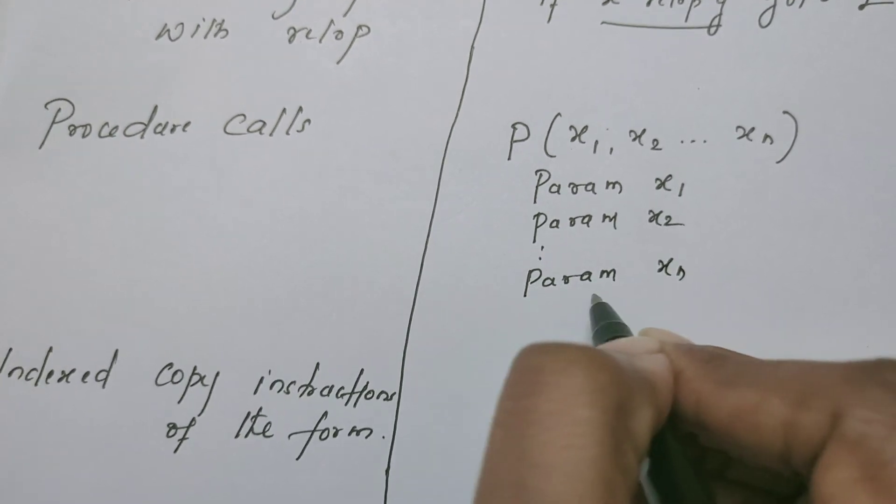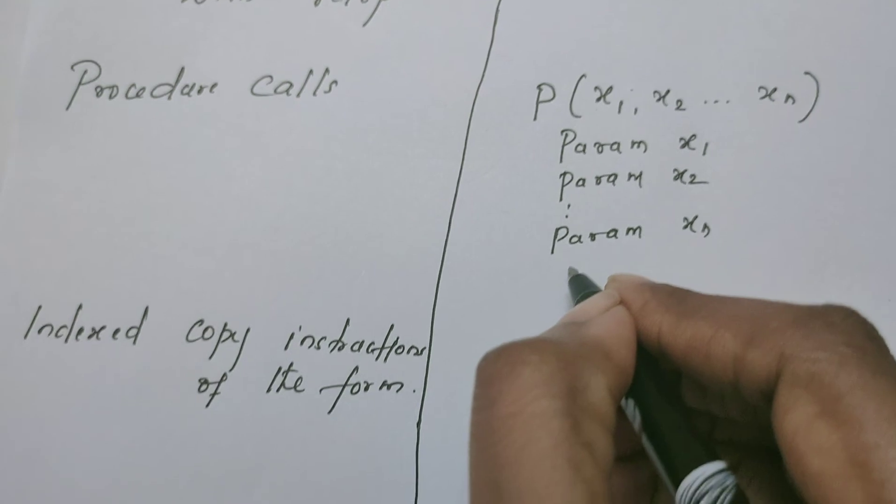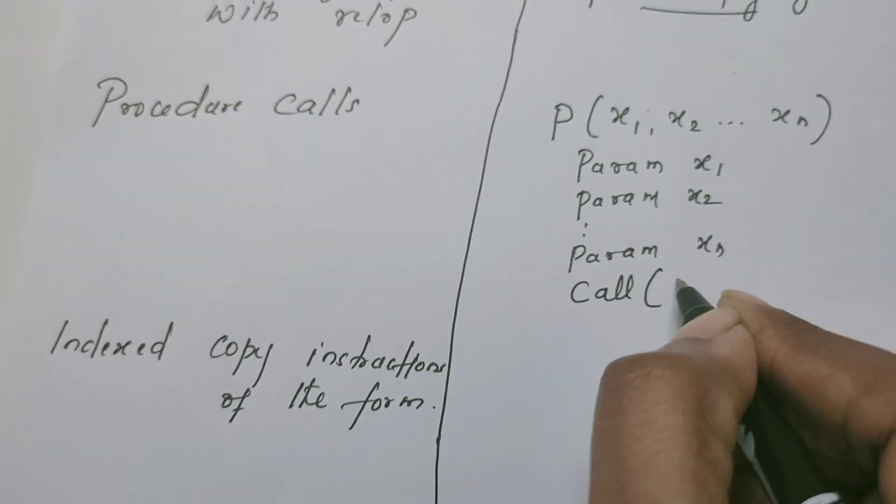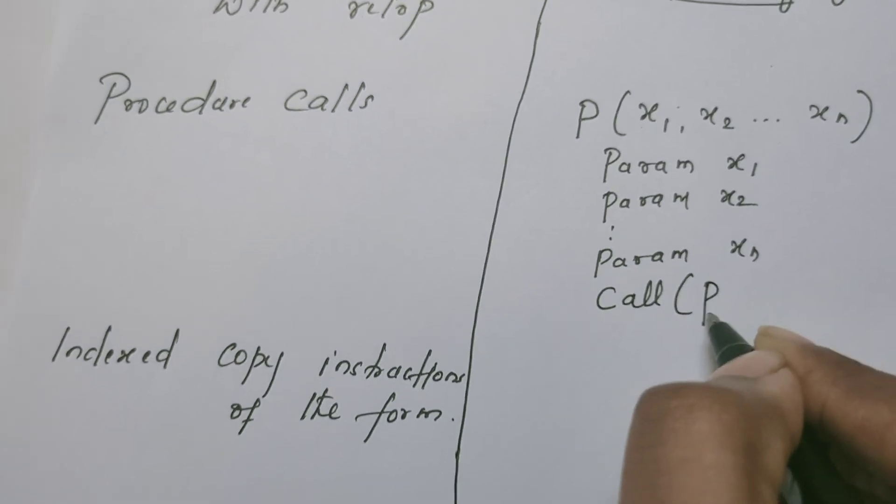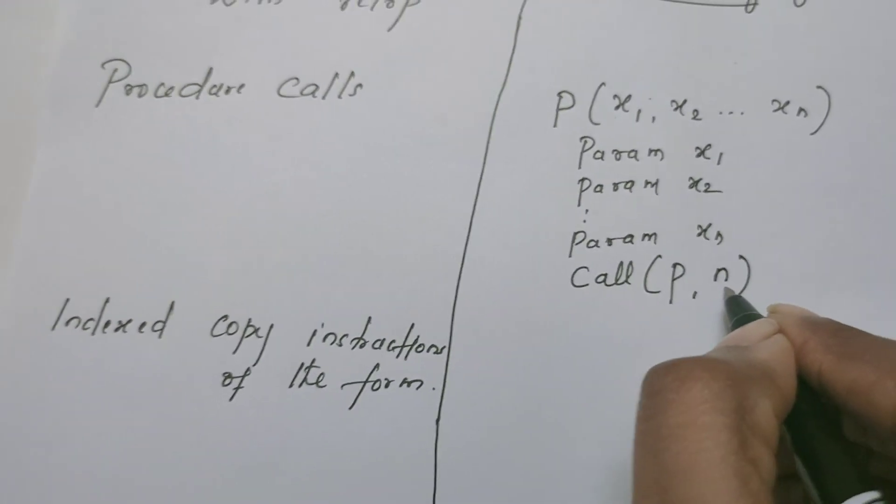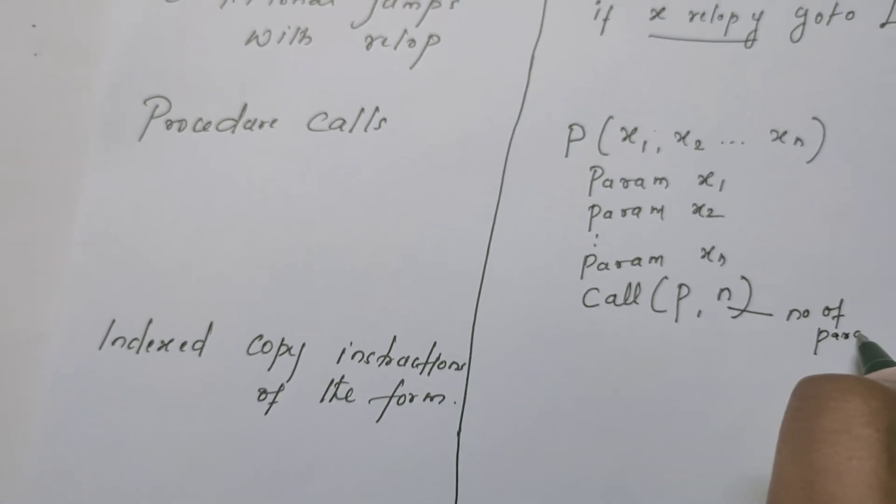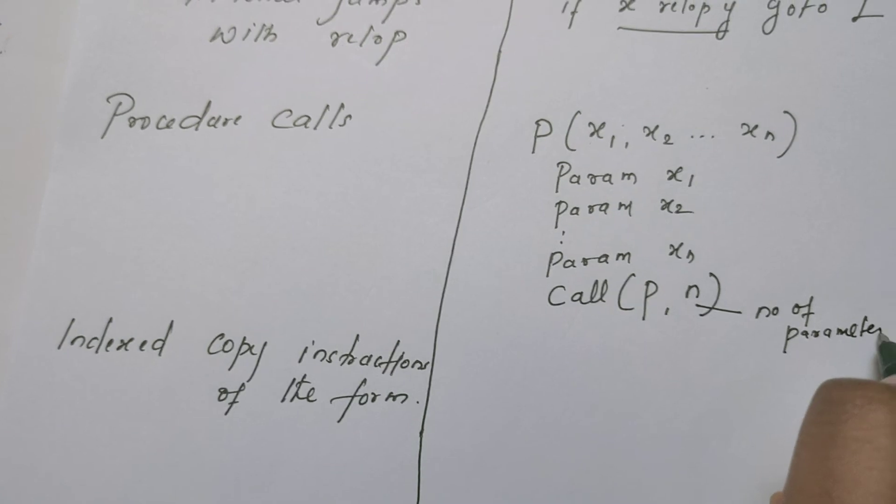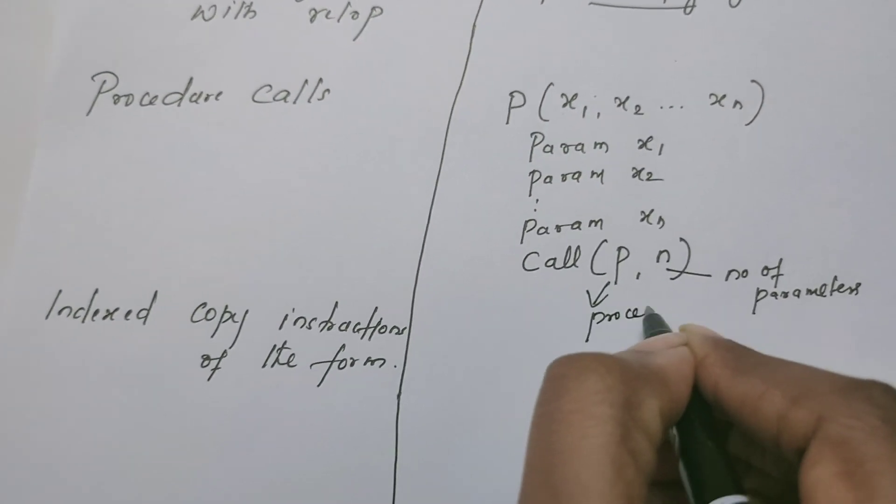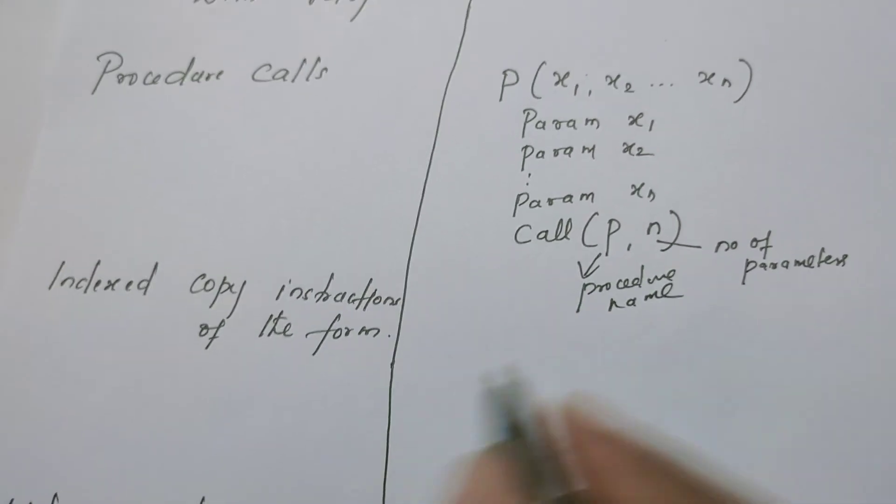This param is a keyword indicating that x1, x2 are the parameters. Then you can write the keyword call. The first argument is a procedure name which is p, and this n is the number of parameters. And this p is the name of the procedure.